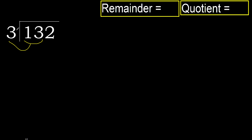3 multiplied by which number is nearest to 13 but not greater? 3 multiplied by 5 is 15 — 15 is greater. Multiply by 4 is 12, which is not greater.